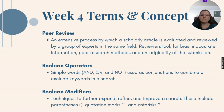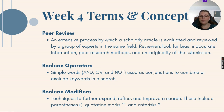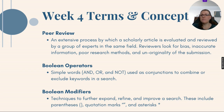Peer review is an extensive process by which a scholarly article is evaluated and reviewed by a group of experts in the same field. The reviewers look for bias, inaccurate information, poor research methods, and unoriginality of the submission. Peer review looks very in depth at the article, and this makes the article top tier if it is peer reviewed and approved.